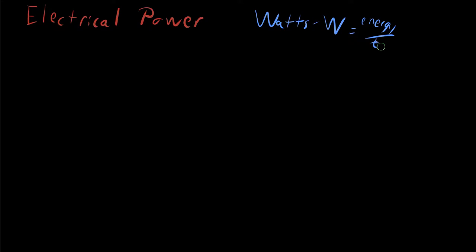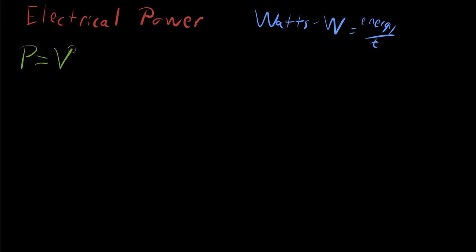The classical way of calculating the power consumed by any single component in a circuit: P is equal to the voltage times the current.